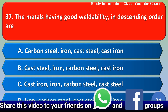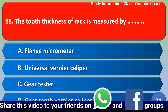Next question: The metals having good weldability in descending order. The correct answer is option B: cast steel, iron, carbon steel, cast iron.